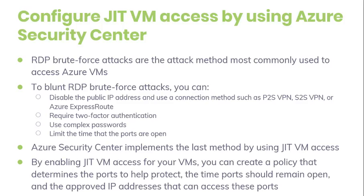Just-in-time VM access reduces the exposure time of ports and increases your visibility into the use of privileged accounts. When you enable just-in-time virtual machine access for your VM, you can create a policy that determines the ports to protect, how long ports should remain open, and the approved IP addresses that can access those ports. The policy helps you stay in control of what users can do when they request access. Requests are logged in the Azure Activity Log so you can easily monitor and audit access. The policy will also help you quickly identify existing VMs that have just-in-time access enabled and VMs where just-in-time access is recommended.